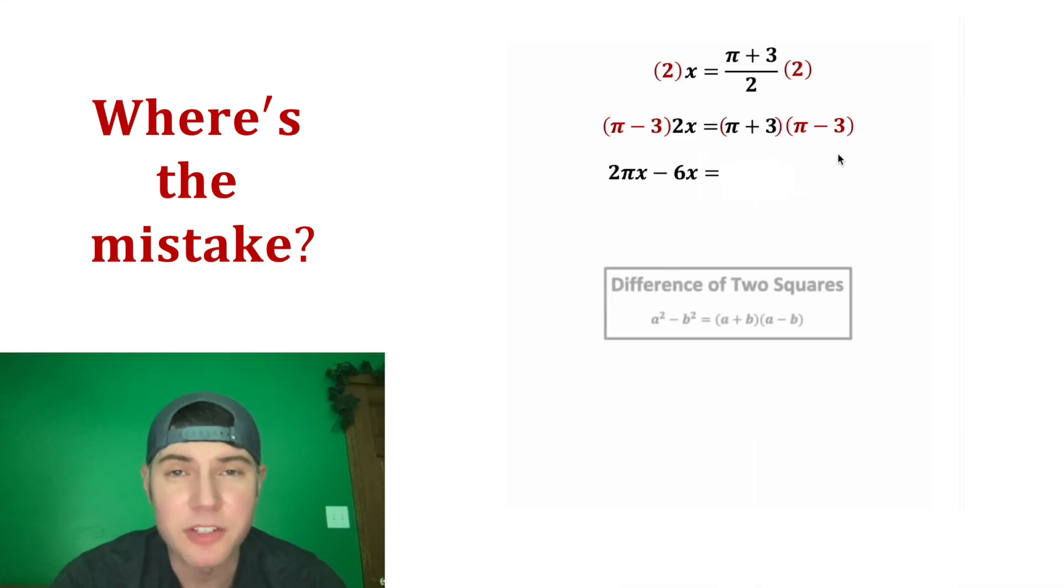And on the right hand side this is a difference of two squares. Anytime you have a plus b times a minus b it's just a squared minus b squared. Or in this case pi squared minus 3 squared, or in other words pi squared minus 9.